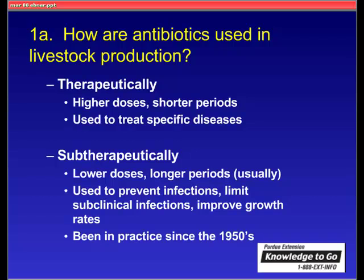Antibiotics are used in two basic manners in livestock production. The first is therapeutic use — using the drugs at higher doses for shorter periods to treat specific disease, where the veterinarian has identified a certain organism and identified a drug to treat that infection within the herd. The second manner is more controversial: subtherapeutic use, using the drugs at lower doses for longer periods. Instead of treating a specific disease, this is using the drugs to prevent general infections or limit subclinical infections, and in turn improve the growth rates of the animals.